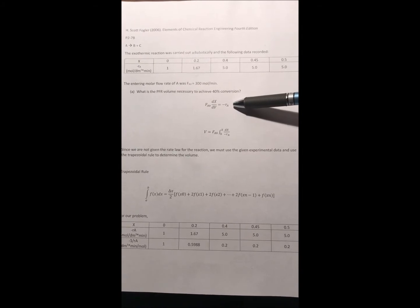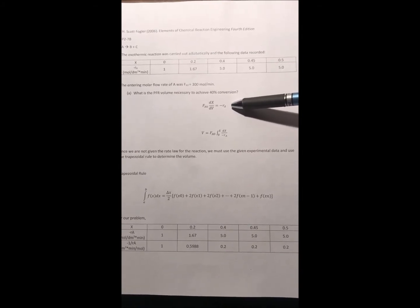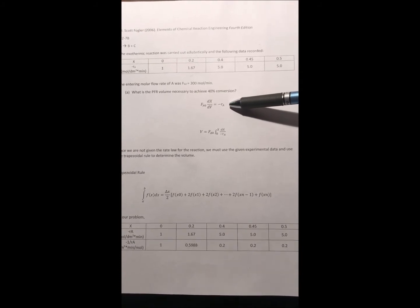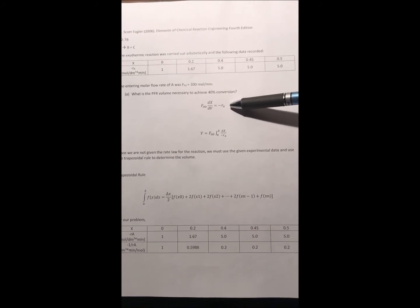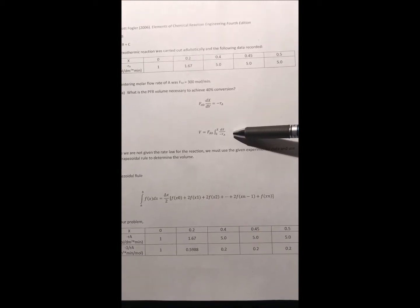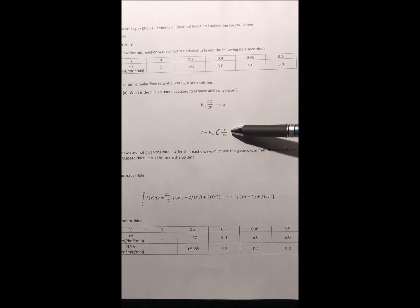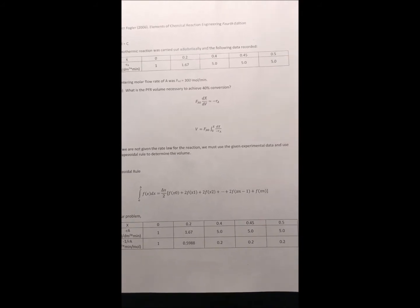This is the equation we'll be using for this problem. The molar flow rate of A coming in times dx over dv equals negative R sub A, the rate of A. And then putting this into integral form we see that the volume is equal to that entering molar flow rate times the integral from zero to our conversion of dx over negative R sub A.